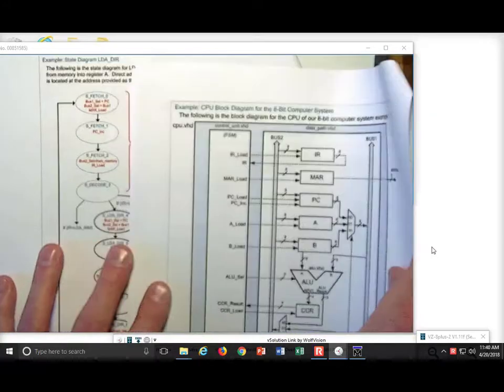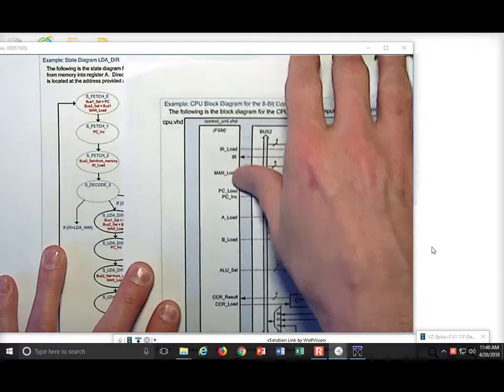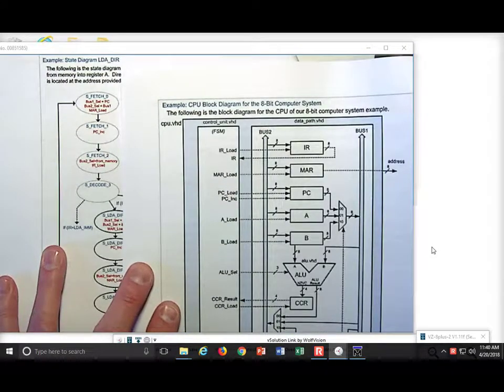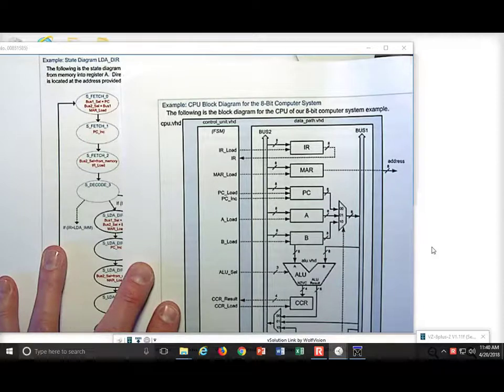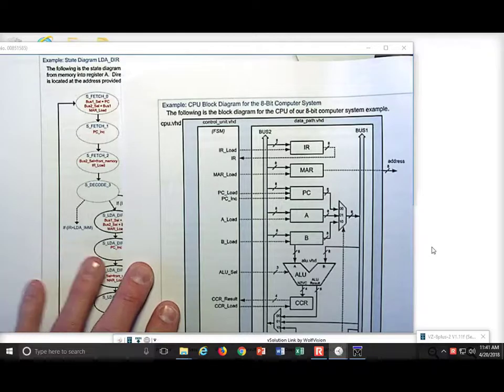Load A means we are going to bring information from the memory system into a register. But direct addressing means the operand is the address of where to get that information.